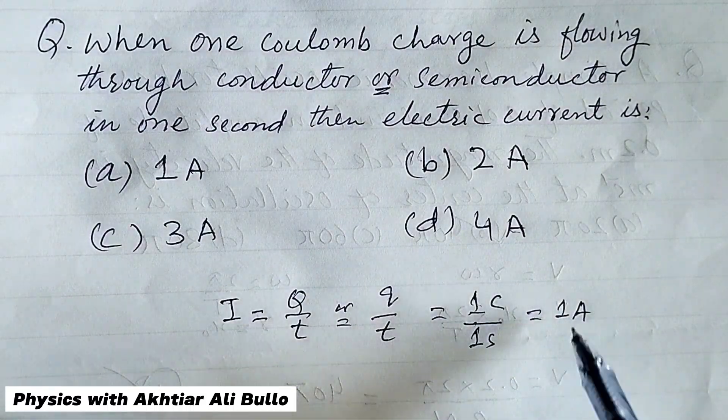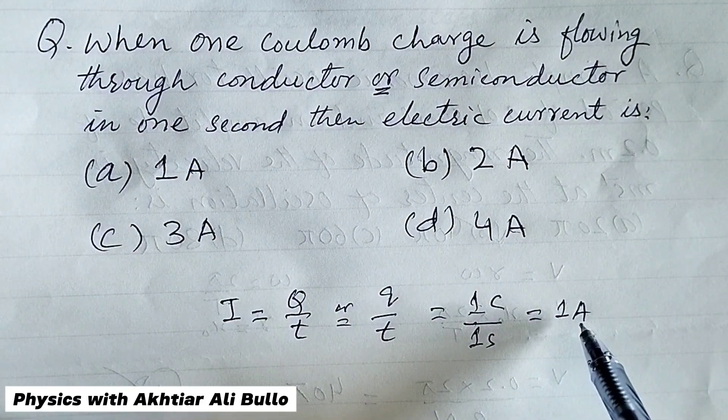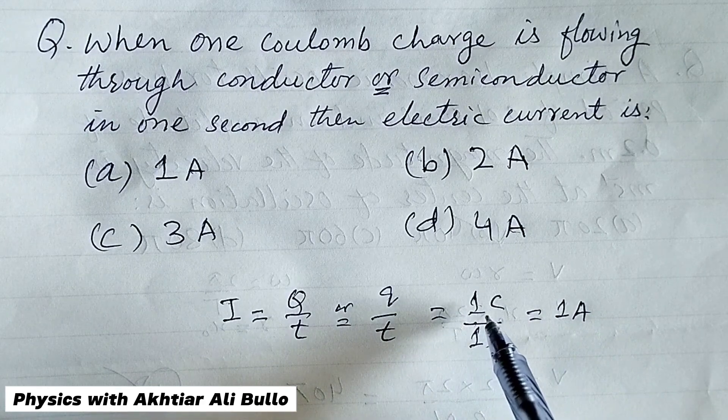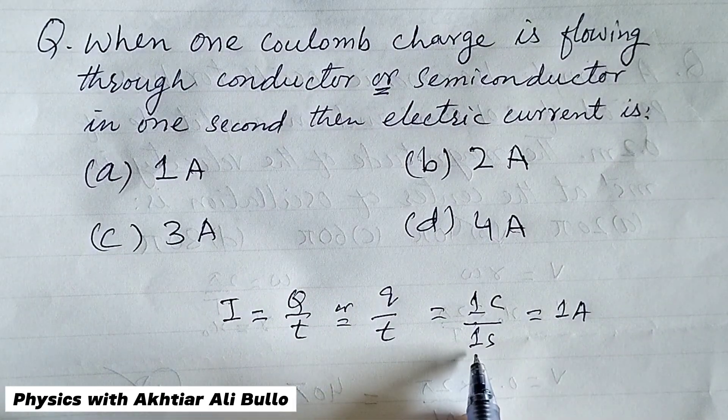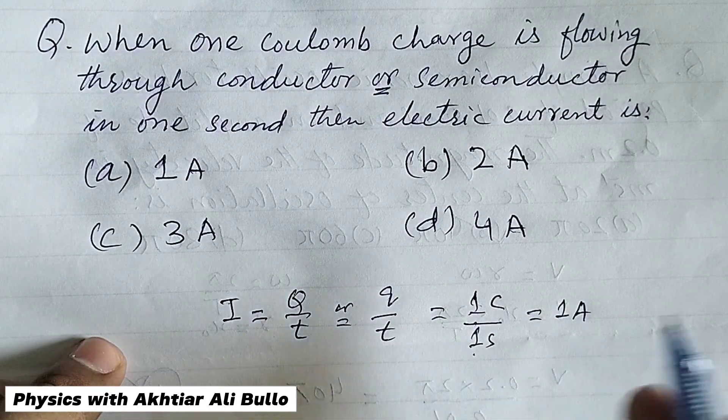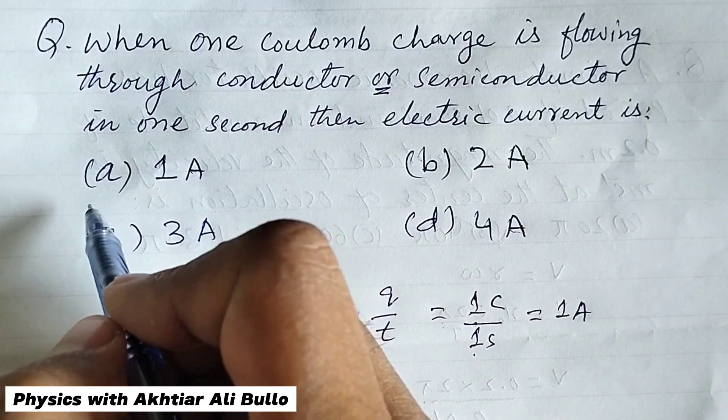Means one ampere is that magnitude of electric current when one Coulomb charge is flowing through a conductor or semiconductor in one second, so the correct option will be A, 1A.